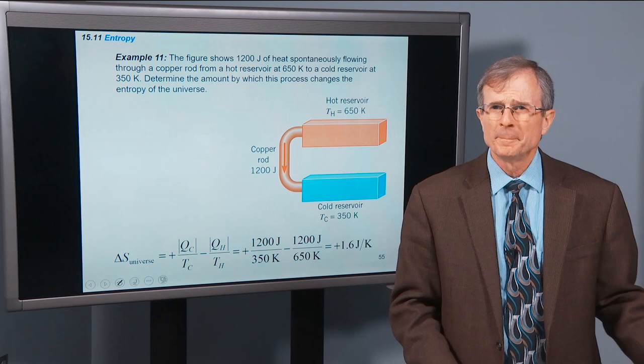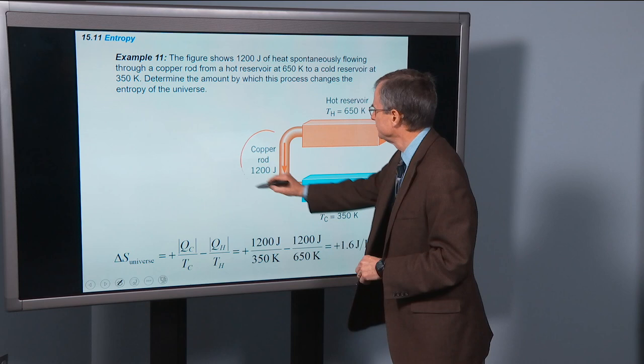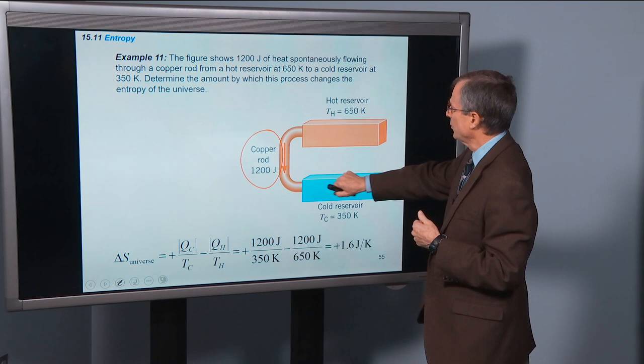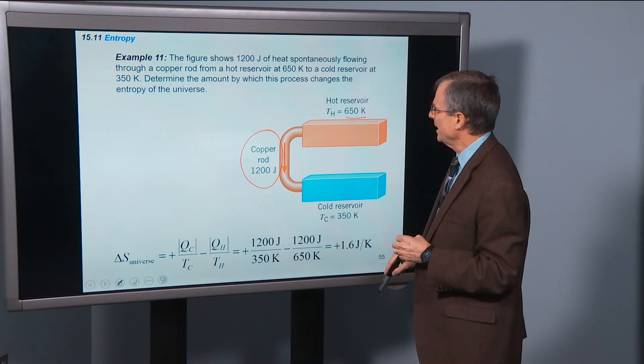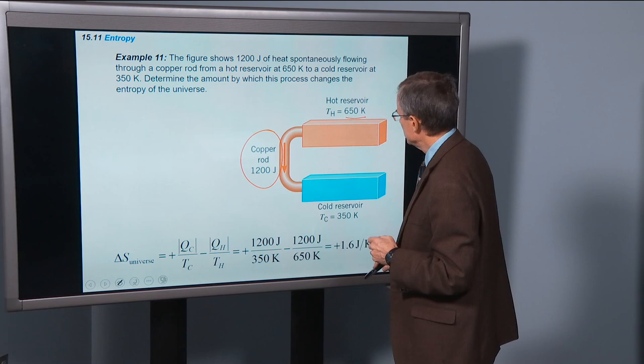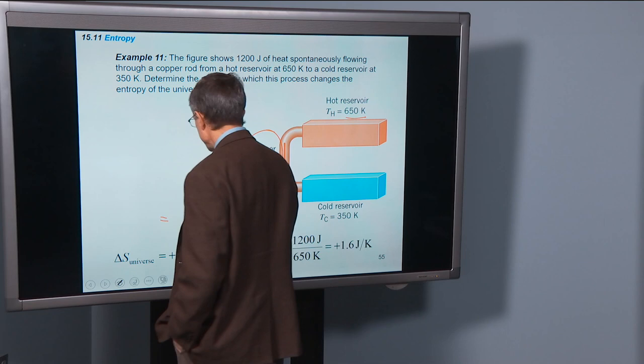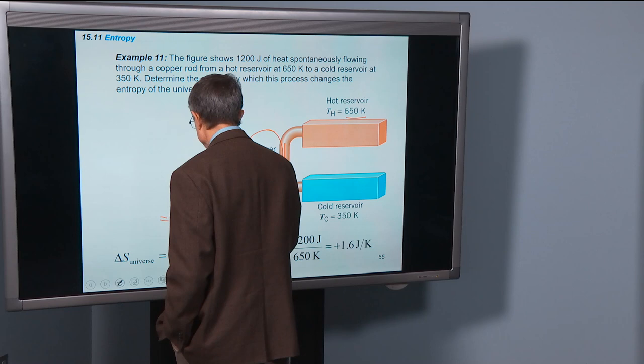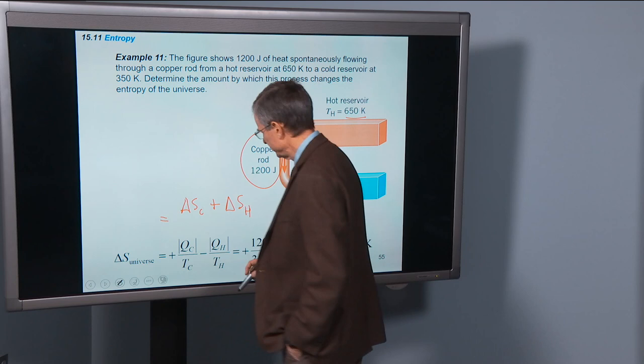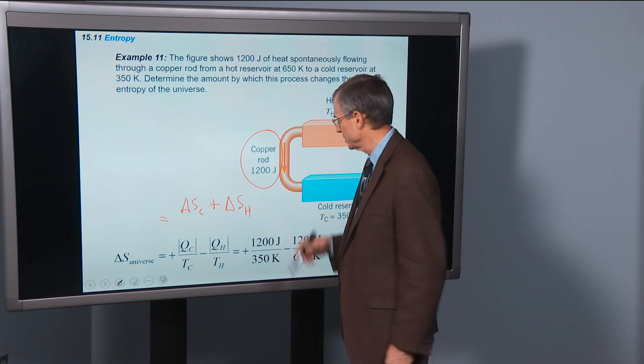So a quick example: a figure shows 1,200 joules of heat spontaneously flowing through a copper rod from a hot reservoir at 650 K to a cold reservoir at 350 K. Determine the amount by which this process changes the entropy of the universe. So what we're going to do is find that the total change in entropy will be the change in entropy in the cold reservoir plus the change in entropy in the hot reservoir. Just have to add up all the changes of entropy to find the total change in entropy of the universe from this process.